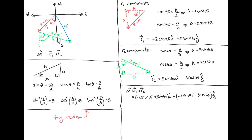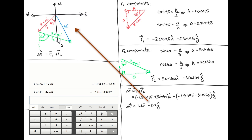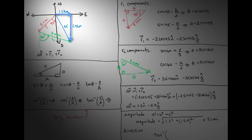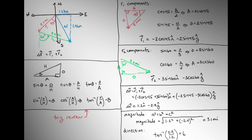I'll pull up Desmos' scientific calculator to do the calculations inside the parentheses, and the final result is 1.2i minus 2.9j. The meaning of that result is that to get from the origin to the final position, you go to the right by 1.2 miles and down by 2.9 miles. If you want the magnitude and direction for this displacement vector, just use the Pythagorean theorem to find the magnitude, which turns out to be 3.1 miles. For direction, the inverse tan of opposite over adjacent gives you the angle between the x-axis and the final displacement vector — that's inverse tan of 2.9 over 1.2, or 68 degrees.